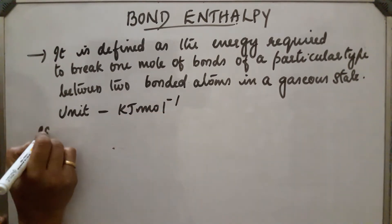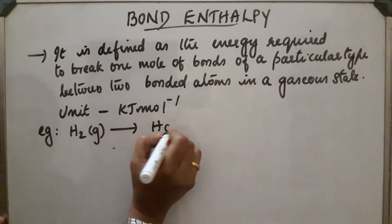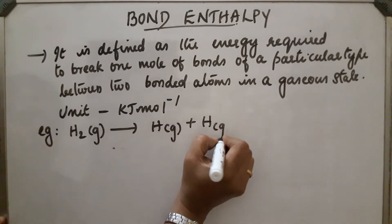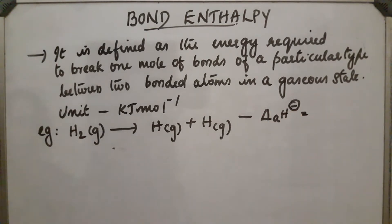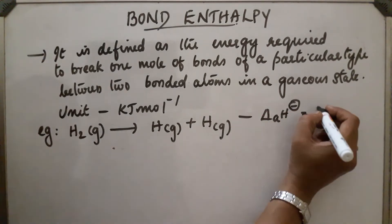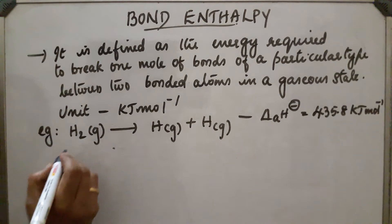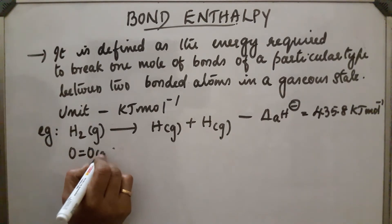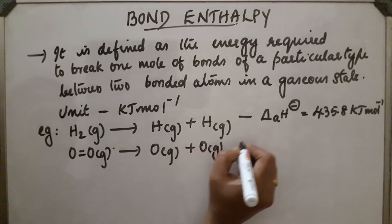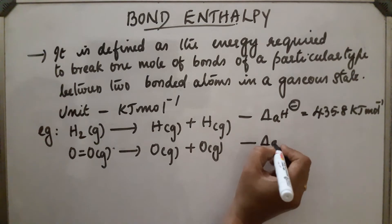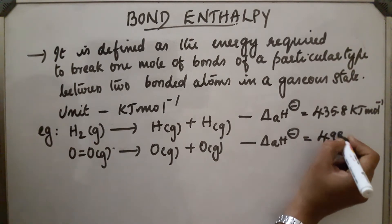In the case of H2 gas dissociating to form hydrogen atoms, the bond enthalpy delta H is equal to 435.8 kilojoule per mole. In the case of O double bond O gas converting into oxygen atoms, the bond enthalpy is found to be 498 kilojoule per mole.